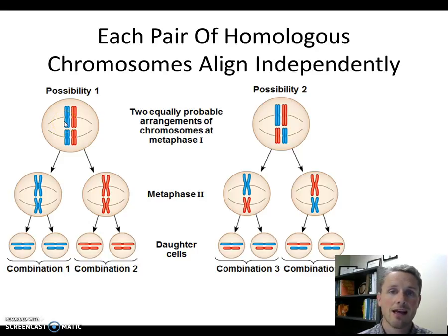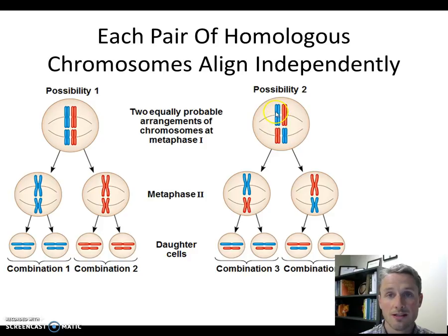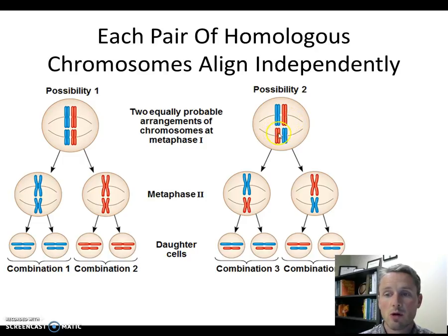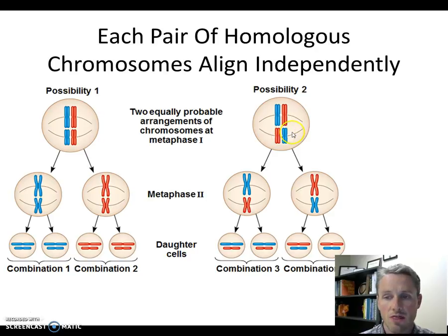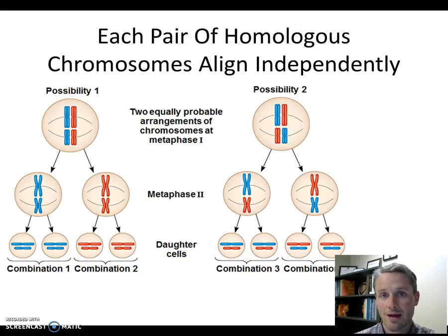But that does not have to be the case — these events are independent. A second way these chromosomes could line up is with the large blue chromosome still on the left and the large red chromosome still on the right, but below them the small chromosomes have switched orientation, so now the red small chromosome is on the left and the blue small chromosome is on the right. That is independent assortment: the way homologous chromosomes line up on the metaphase plate during metaphase 1 is completely independent of one another.